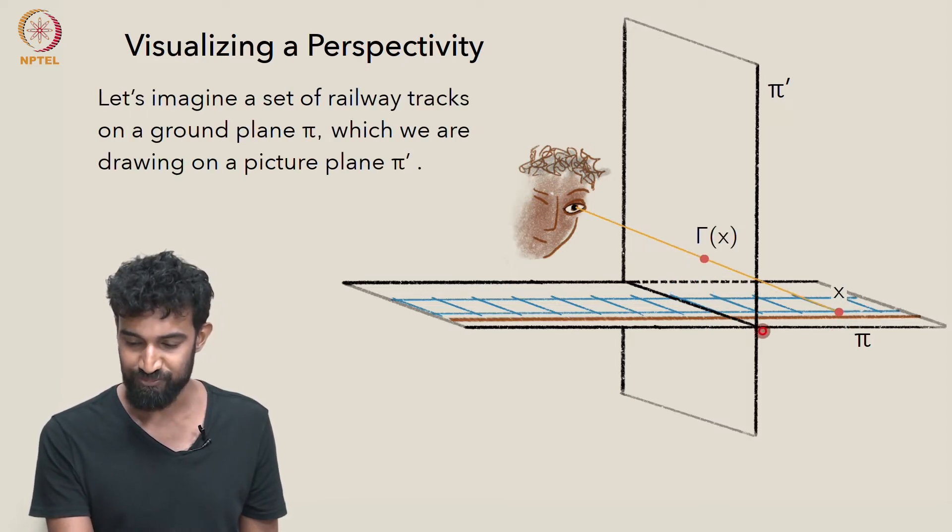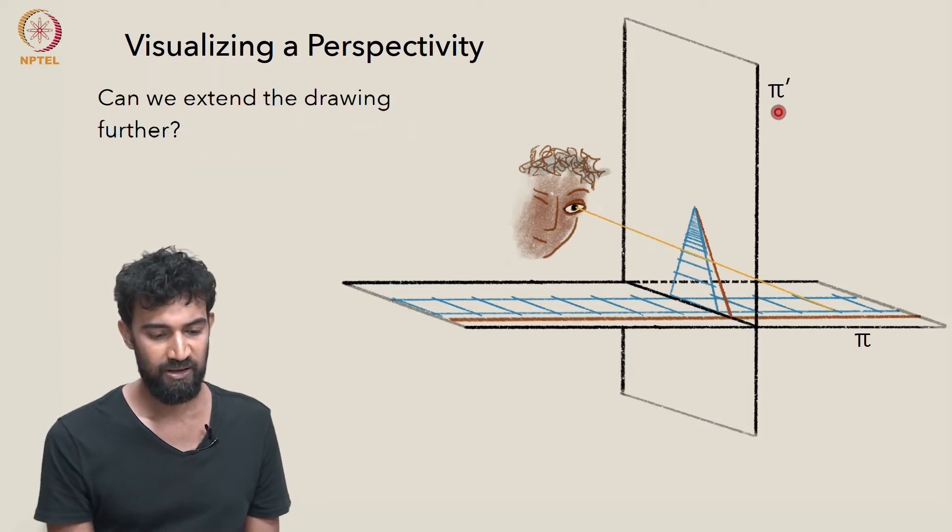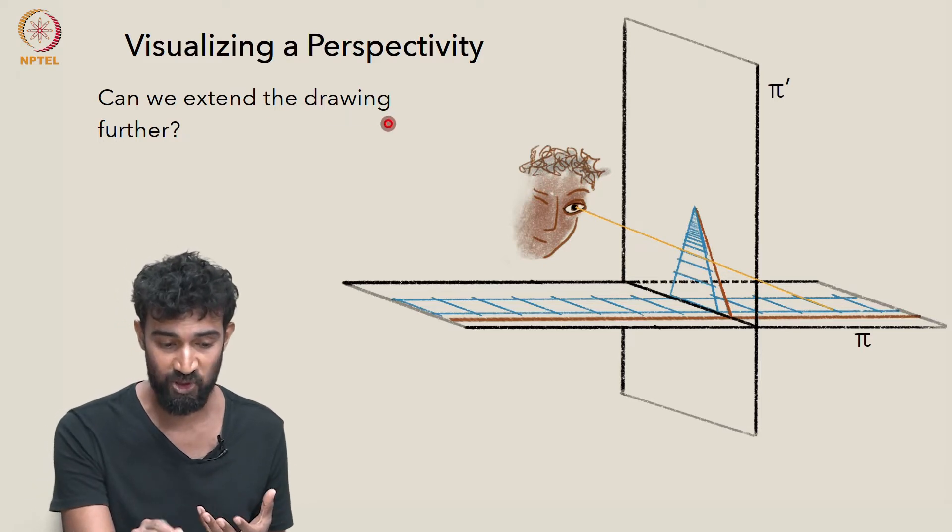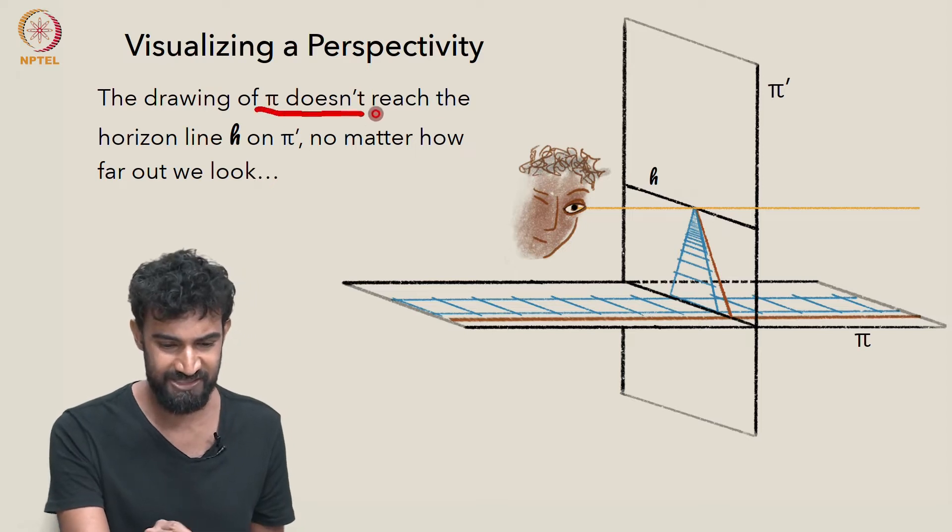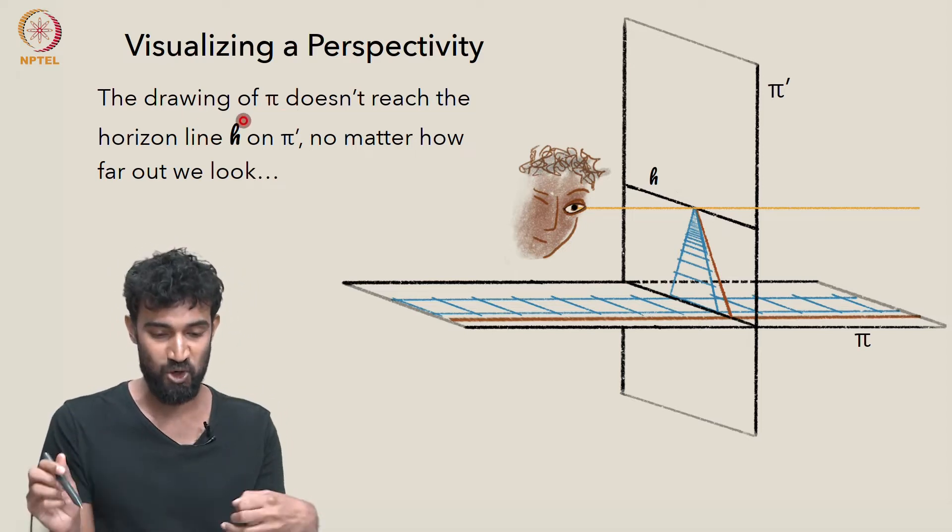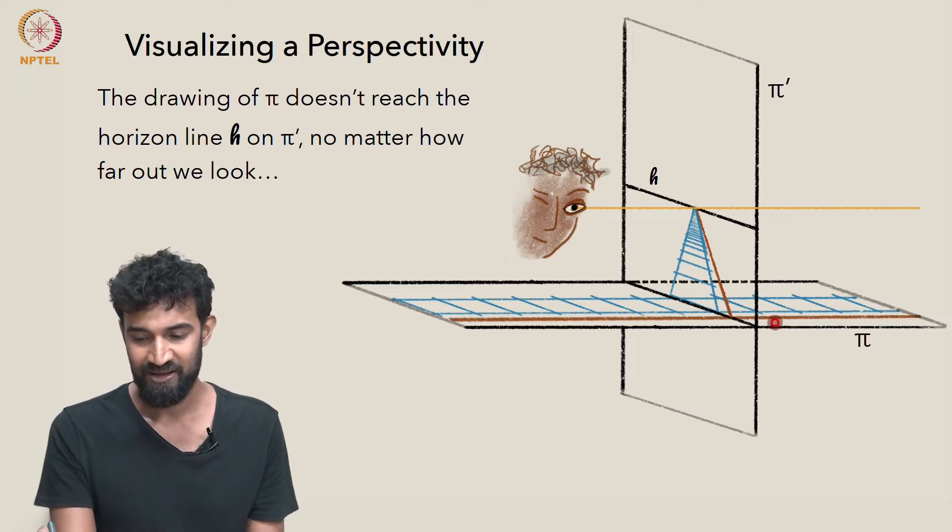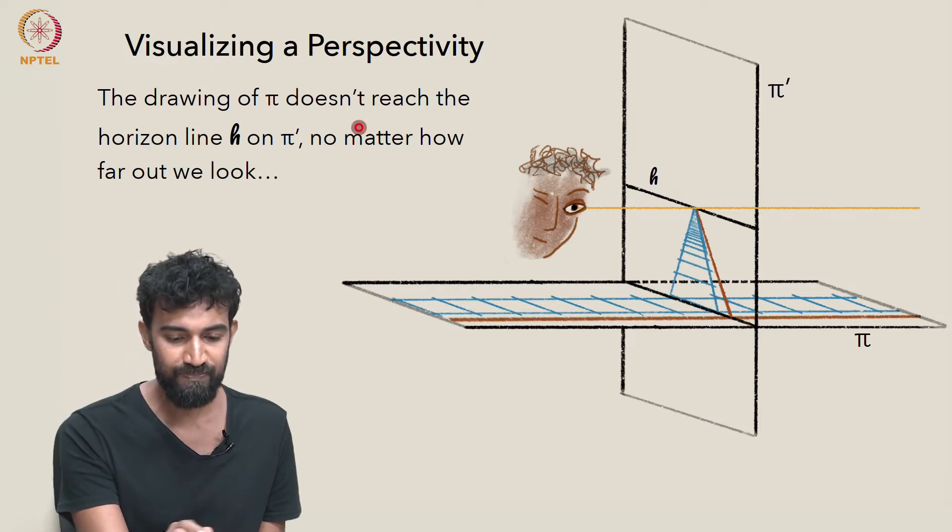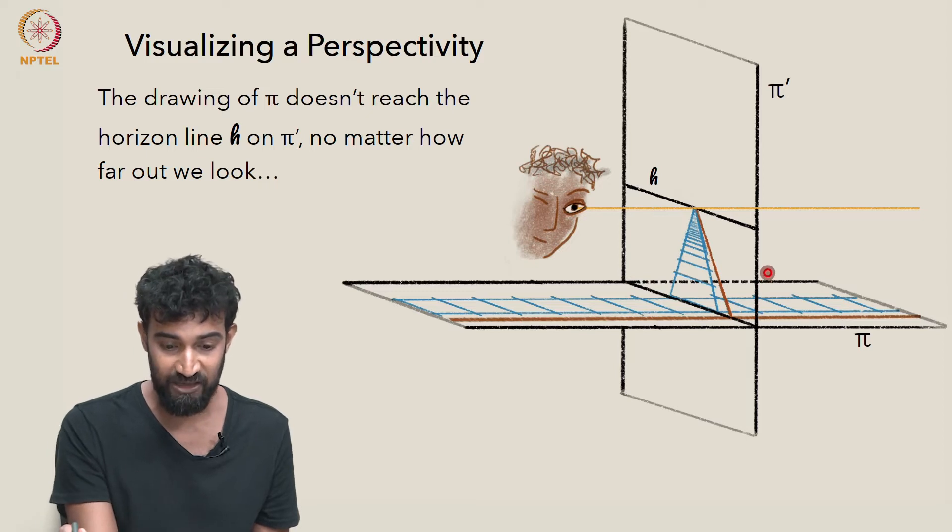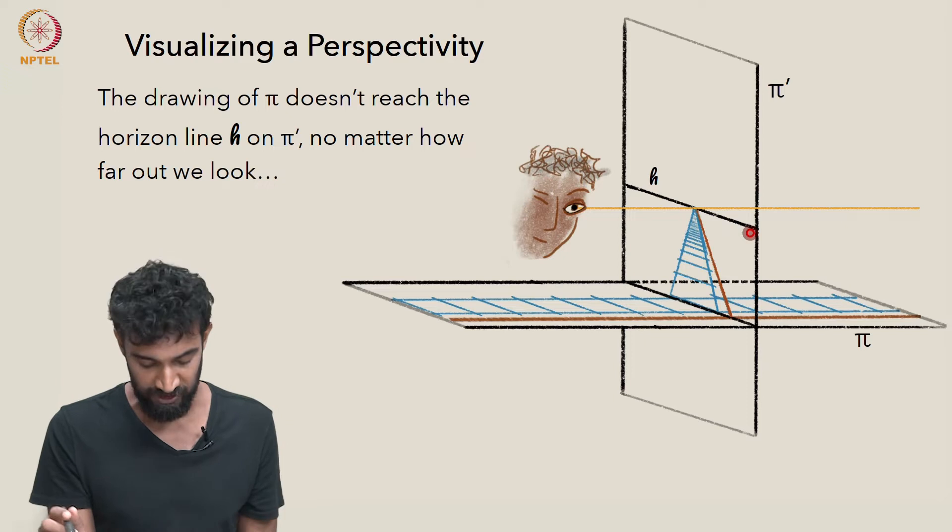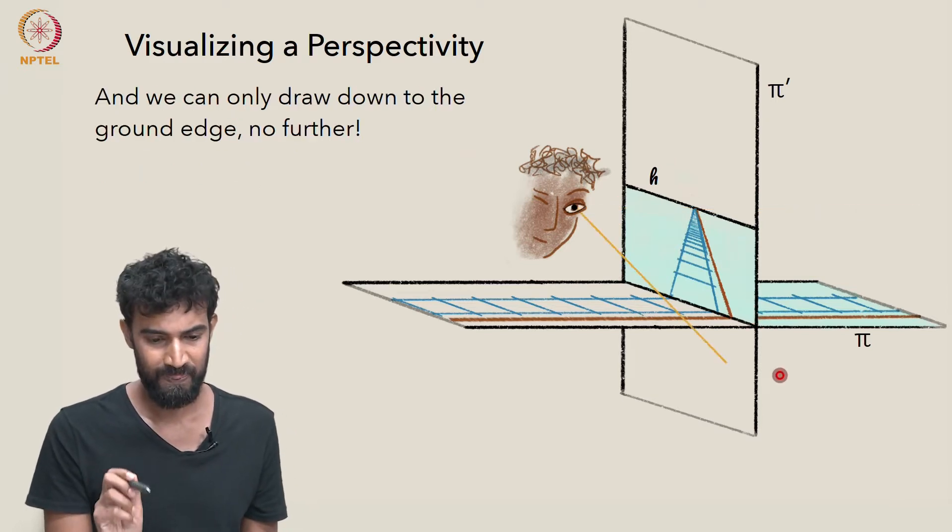So the portion of pi prime over here, these railway tracks are creating an image of railway tracks in this portion of the plane pi prime. And we can ask the question whether we can extend the drawing further once we've drawn the tracks up to this vanishing point here. And unfortunately, it doesn't seem like we can if we're imagining that we're actually in real life doing a drawing of the ground plane. Of course there might be stuff sitting above the ground plane, but for this example, everything we're drawing is in the ground plane pi, and we're drawing onto this plane pi prime. So no matter how far out we look in the plane pi, we're not going to see anything above or even on the horizon line h. So this region, which is kind of infinite, is going to map to this finite region here on pi prime via the perspectivity.